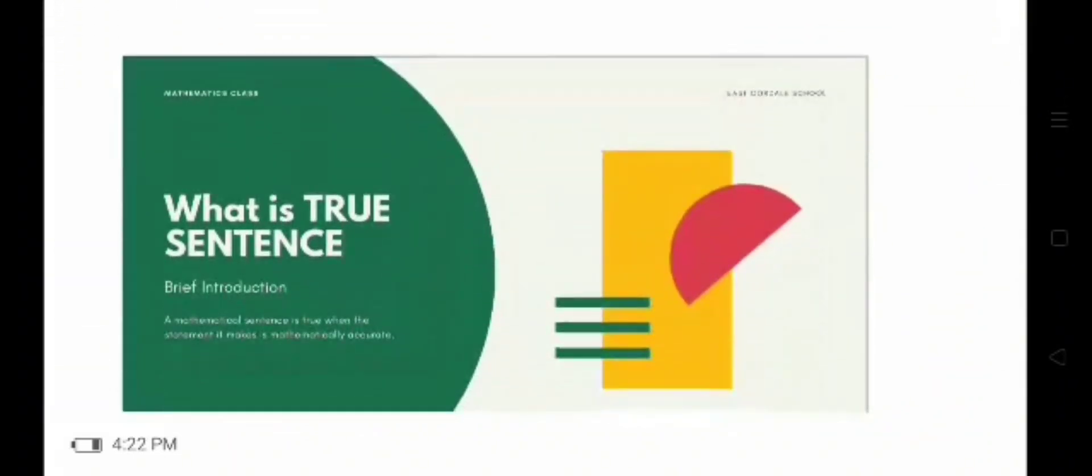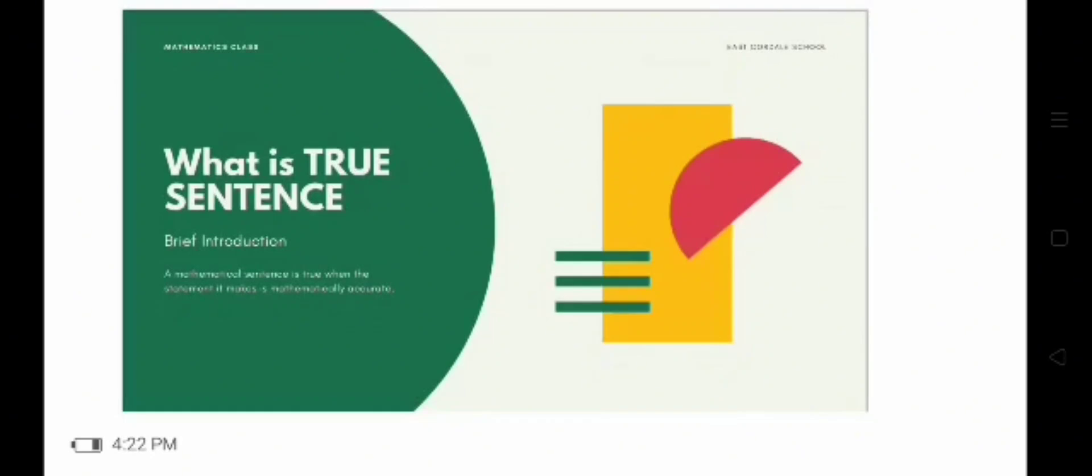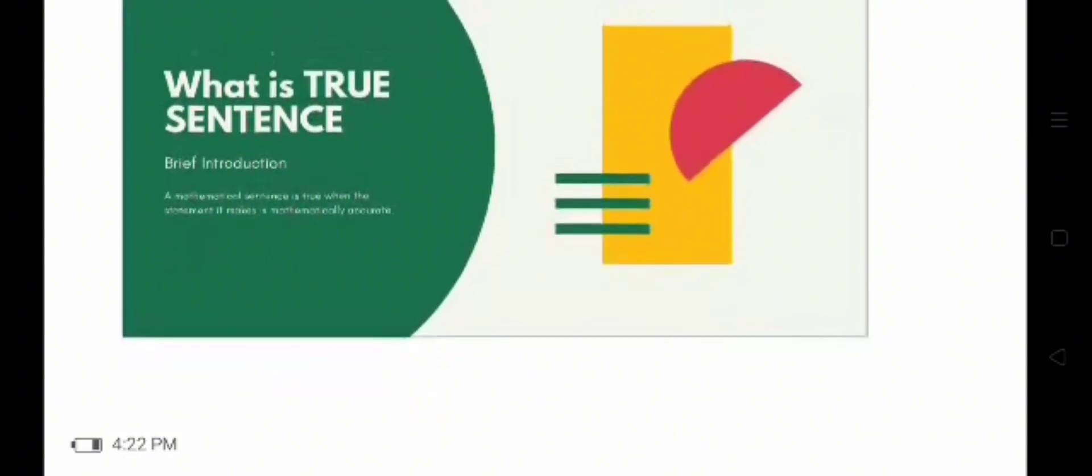Hello, my name is Benedict John Paul P. Dionisio. I'm here to discuss to you my topic about true sentence. But first, I want to make a short brief about true sentence. What is true sentence? True sentence is a mathematical sentence is true when the statement is mathematically accurate. True sentence is true if the problem is mathematically accurate or equal. Equal or the answer is correct to a problem.